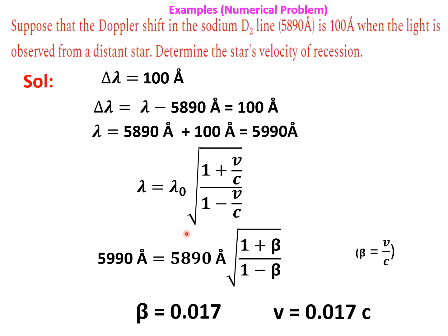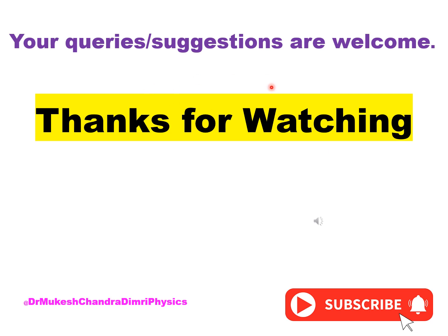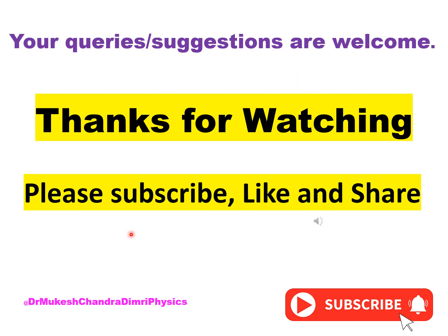If ν is given instead of λ, we use the formula ν = c/λ to convert and find the corresponding frequency formula. Thanks for watching this video. If you have queries or suggestions, please write in the comment box. If you are new to this channel, please subscribe. In the next video we will discuss another topic in relativity and modern physics.